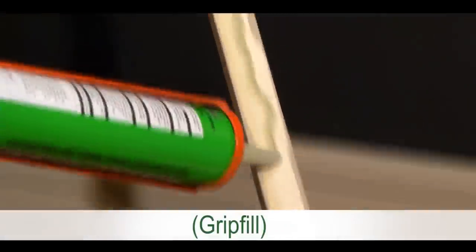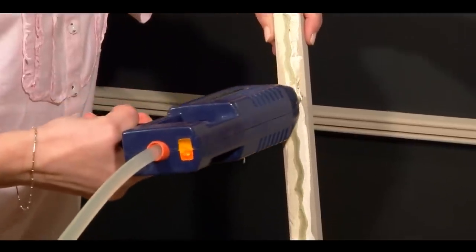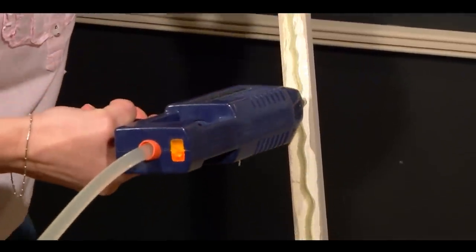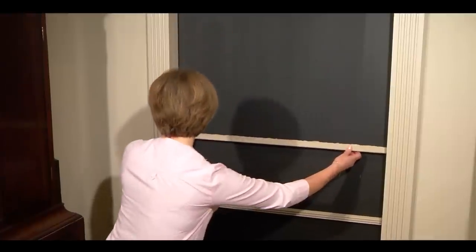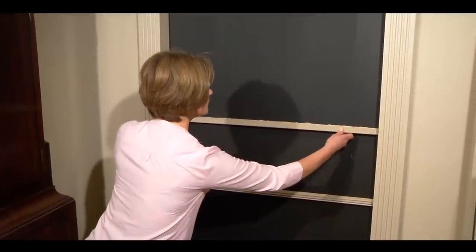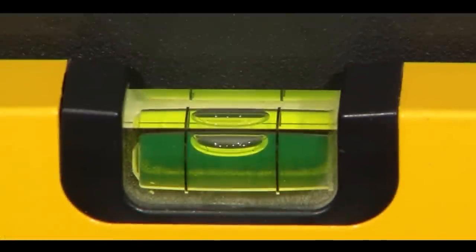We use grip fill in the green tube as a permanent adhesive and put a strip of hot melt glue along the shelf for instant contact to hold the shelf in place while the grip fill is hardening. Check the shelf level with the spirit level.